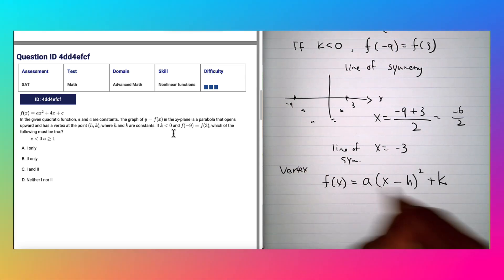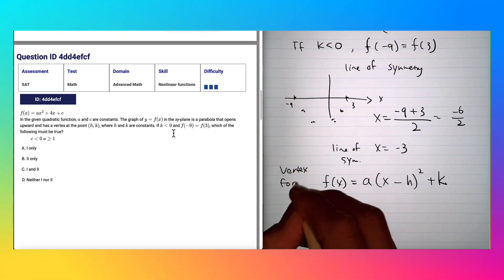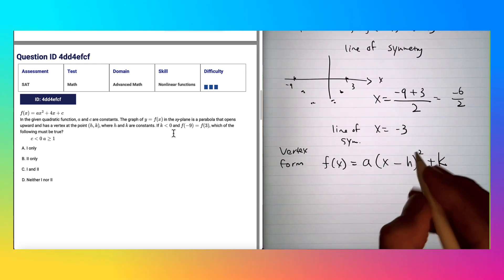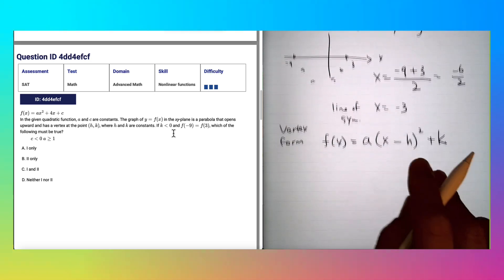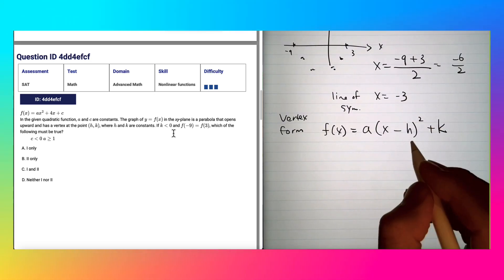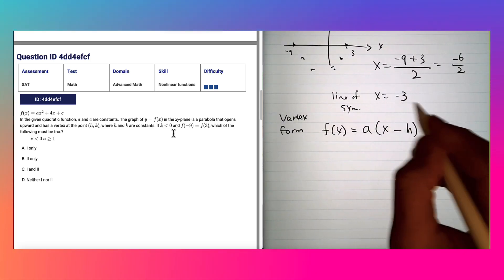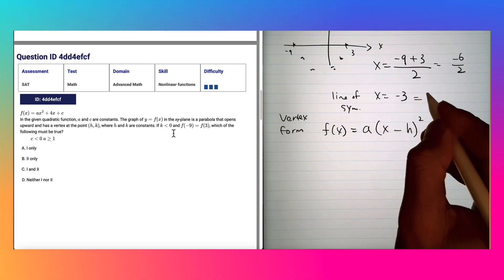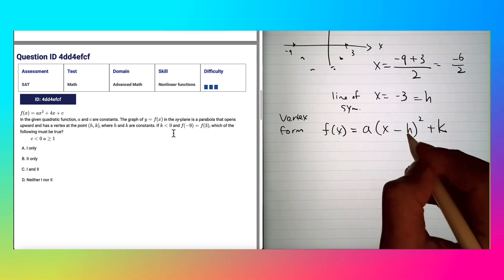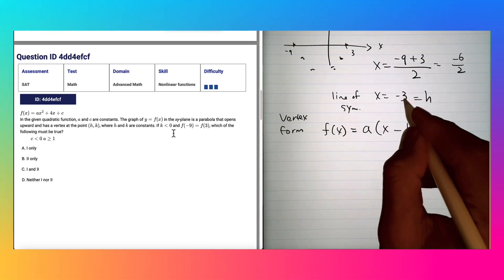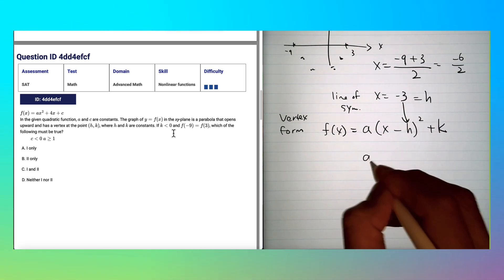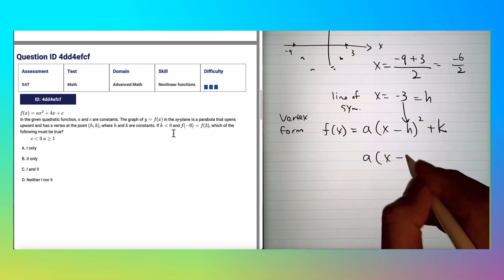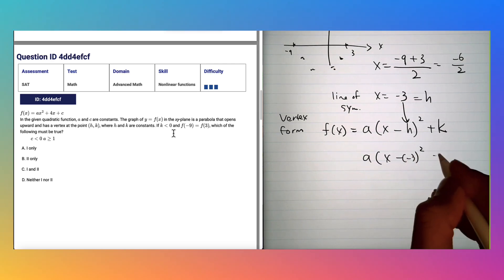If this is the first time you're learning vertex form, the good thing about this is that you can find the point (h, k) at one glance. So let's plug it in here. If the line of symmetry is actually h right now, this is what the line of symmetry h is about. So we plug in -3 here, then we get a(x - (-3))² + k.